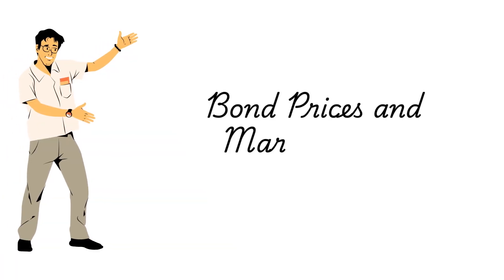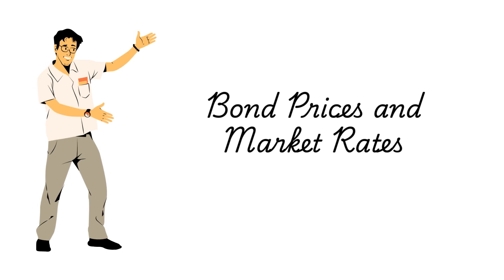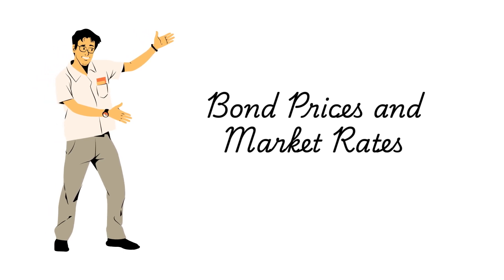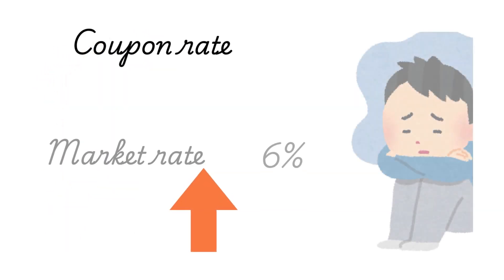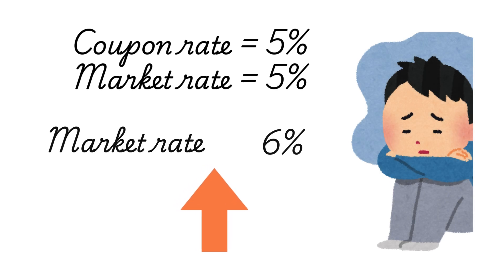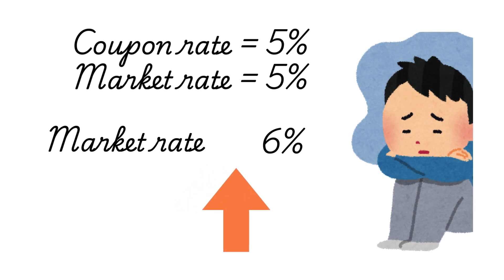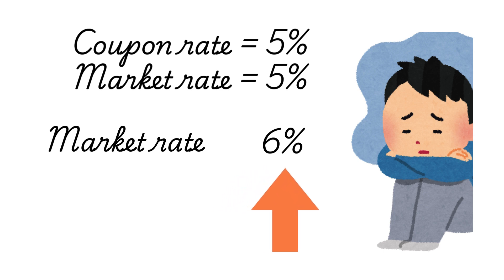Did you know about the intuition behind an inverse relationship between bond prices and market rates? Imagine you buy a bond which offers a coupon rate of five percent at a time when the market rate is five percent as well. If the market rate subsequently rises to six percent, you really feel cheated because you